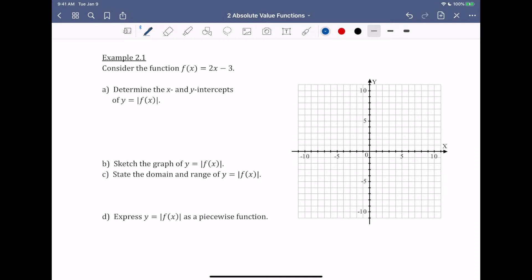So here, when we're looking at our x-intercepts, the x-intercept is the same for f(x) and |f(x)|. So what I'm going to do is solve for my x-intercept on 2x - 3. And we get (3/2, 0).